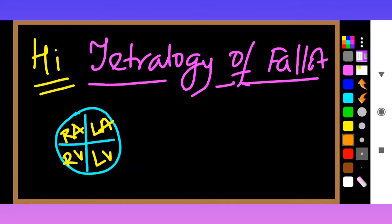There are four important things you have to learn about this. The first important thing is that this heart contains a ventricular septal defect — there is a septal defect in the ventricles. You can see I have marked the ventricular septum defect in orange.